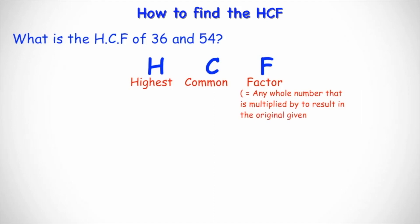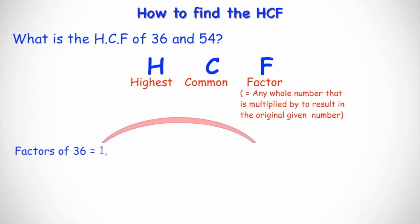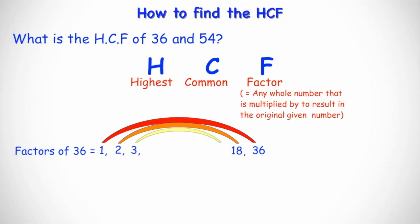For example, the factors of 36 — what numbers multiply to give you 36? We can always start with 1 and 36 itself, since 1 times 36 is 36. Then going up the scale, we look at 2: what do we multiply by 2 to give us 36? We find that 2 times 18 is 36, so the partner for 2 is 18. Does 3 go into 36? Yes — the partner for 3 is 12, because 12 times 3 is 36.